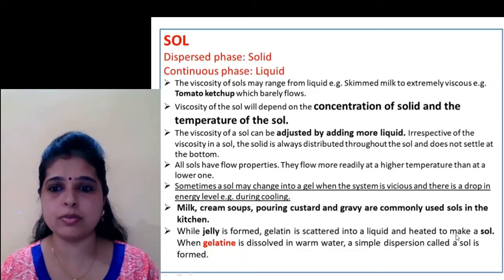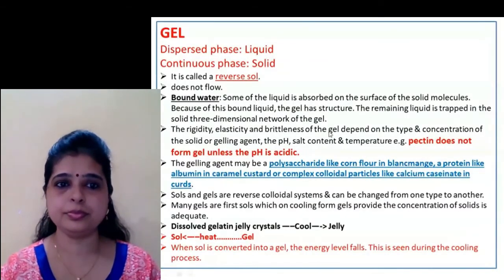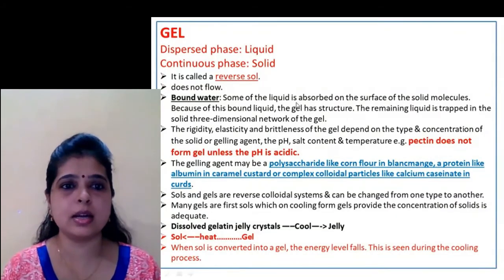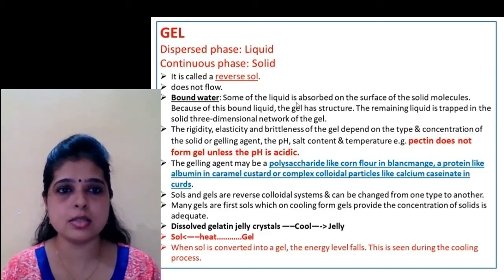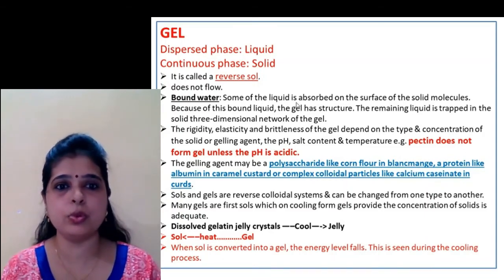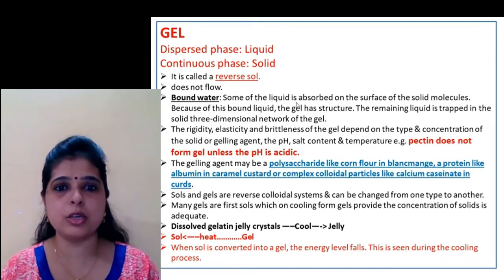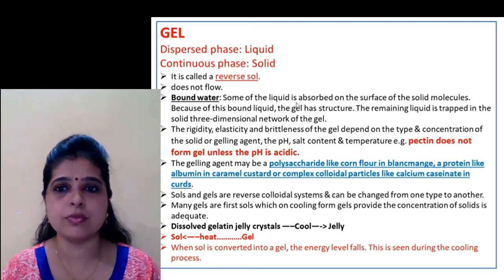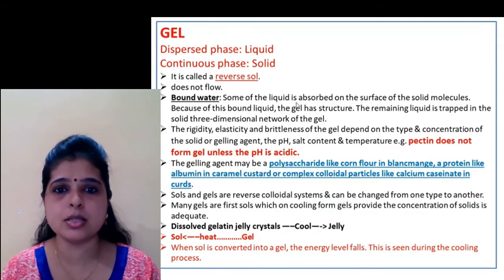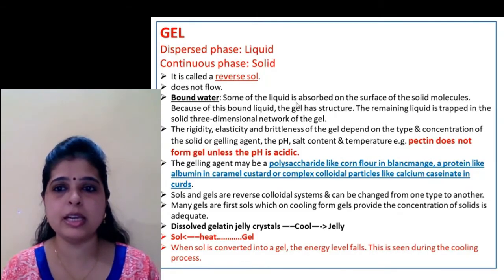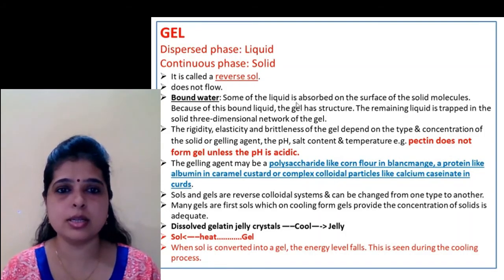When jelly is formed, gelatin is scattered into liquid and heated to make a gel. Gel does not flow, but sol colloidal system does flow. Ye flow nahi karta hai — gel. It has bound properties because of the bound water. Some of the liquid is absorbed on the surface of the solid molecules; because of this bound liquid, gel has some structure. It doesn't flow. The remaining liquid is trapped in the solid three-dimensional network of the gel.